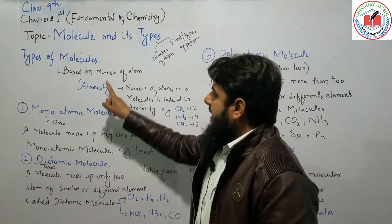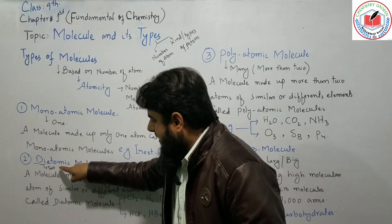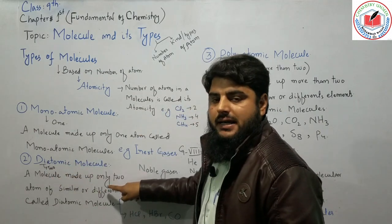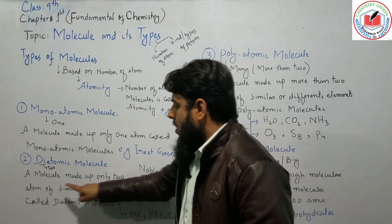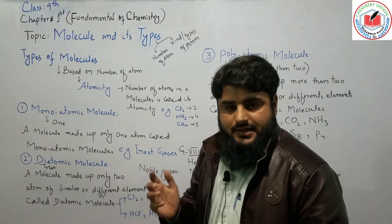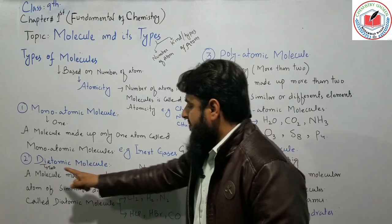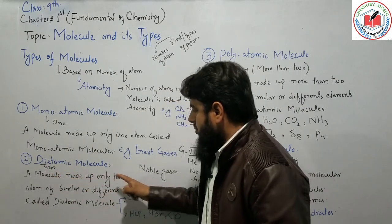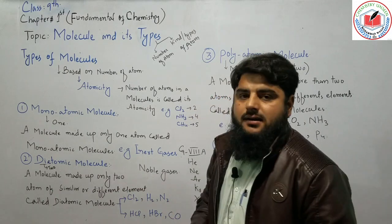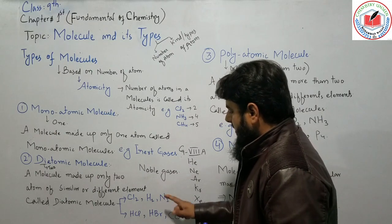When a molecule is made of only two atoms, it is called a diatomic molecule. These two atoms can be from similar or different elements. Examples of diatomic molecules include chlorine (Cl2), hydrogen (H2), and nitrogen (N2).